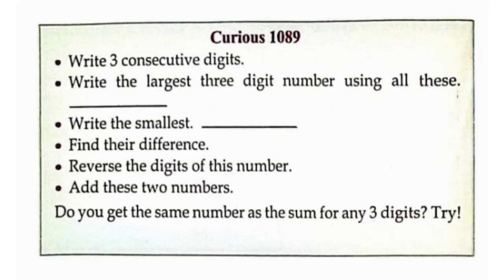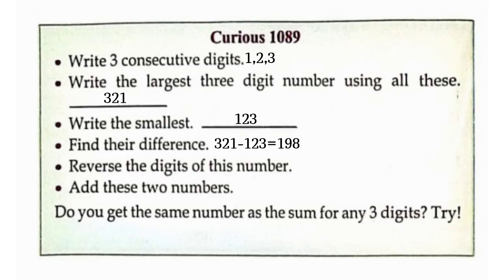Curious 1089. Write 3 consecutive digits: 1, 2, 3. Write the largest 3-digit number using all these: 321. Write the smallest: 123. Find their difference. 321 minus 123 is equal to 198.